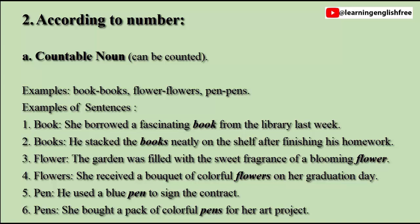2. According to number. A. Countable noun: can be counted. Examples: Book/Books, Flower/Flowers, Pen/Pens. Sentences: She borrowed a fascinating book from the library last week. He stacked the books neatly on the shelf after finishing his homework. The garden was filled with the sweet fragrance of a blooming flower. She received a bouquet of colorful flowers on her graduation day. He used a blue pen to sign the contract. She bought a pack of colorful pens for her art project.